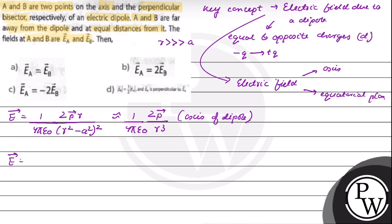Along its equatorial plane, that is the perpendicular bisector plane, electric field vector is given by 1 by 4 pi epsilon 0, P vector upon r square plus a square, raised to power 3 by 2.